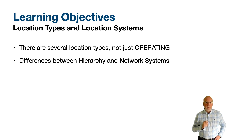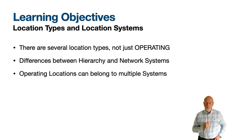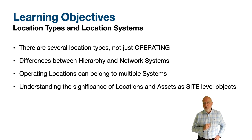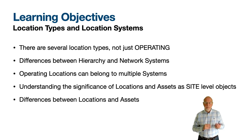A location can belong to multiple systems, not just the primary system, and we'll give some examples of why you might use multiple systems. As this is the first episode in the asset management series, I wanted to emphasize that these are site-based objects and I'll be reviewing the significance of this. Finally, we'll finish off with discussing the similarities and differences between locations and assets. So let's get started.